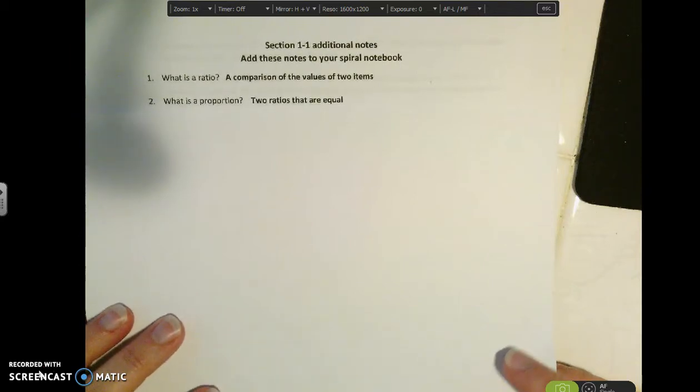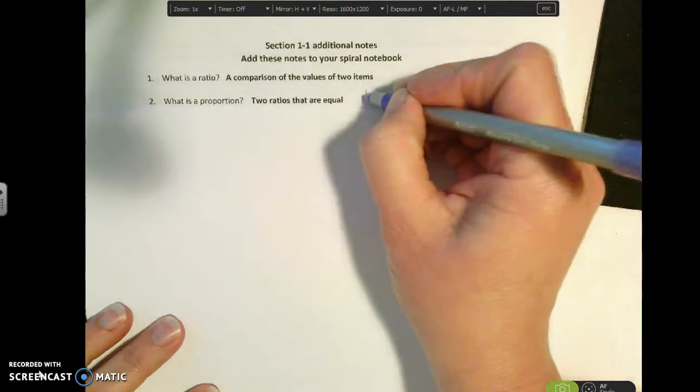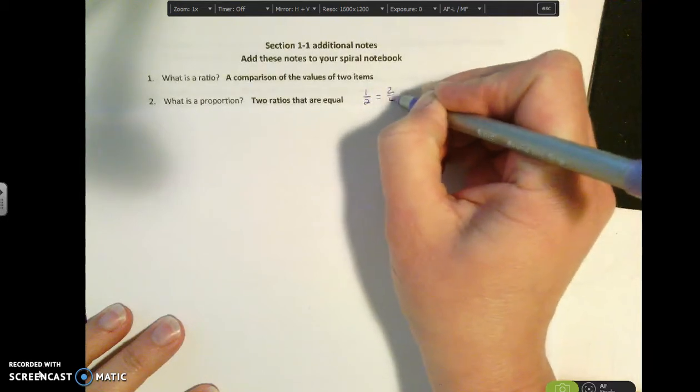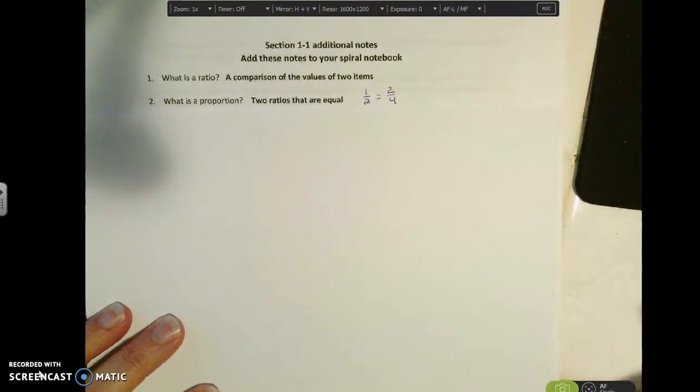What's a proportion? A proportion is just simply two ratios that are set equal to each other. So if I have a ratio that's one half and I have another ratio that's two fourths, those are two ratios that are actually equal to each other. If I were to simplify the two fourths, it would be the same as one half.